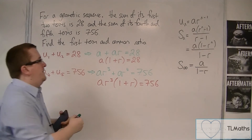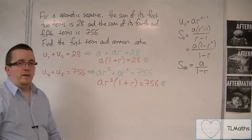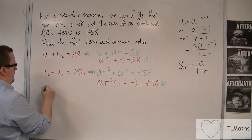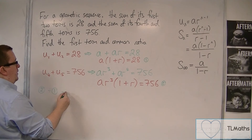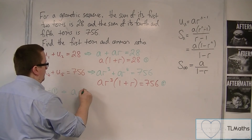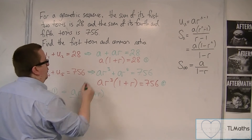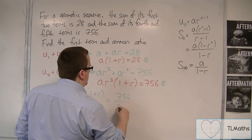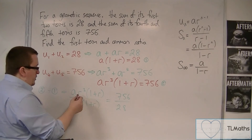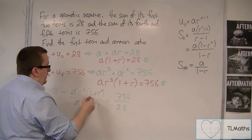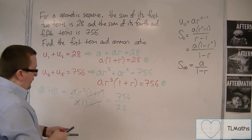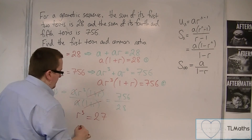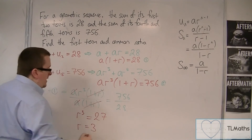What I find is I have two equations that I can divide one by the other to simplify this problem. So if I do equation 2 divided by equation 1, I have ar³(1 + r) over a(1 + r), equal to 756 over 28. The a's cancel, as does the (1 + r). 756 over 28 equals 27, so r³ = 27, and therefore r = 3, the cube root of 27.